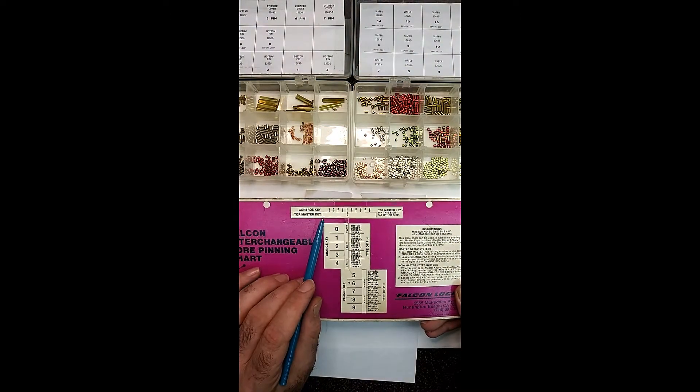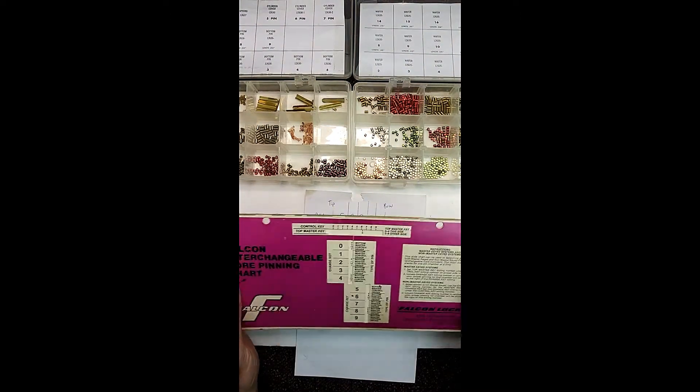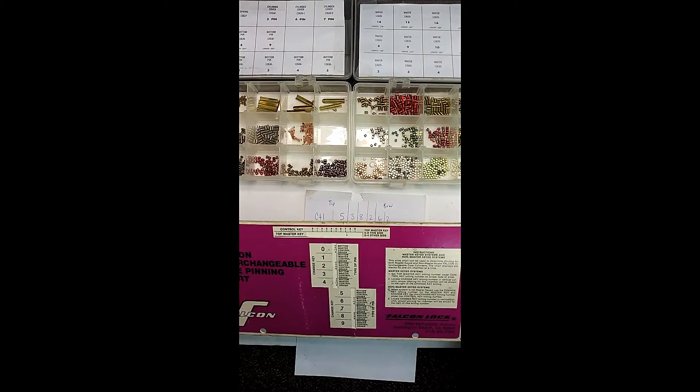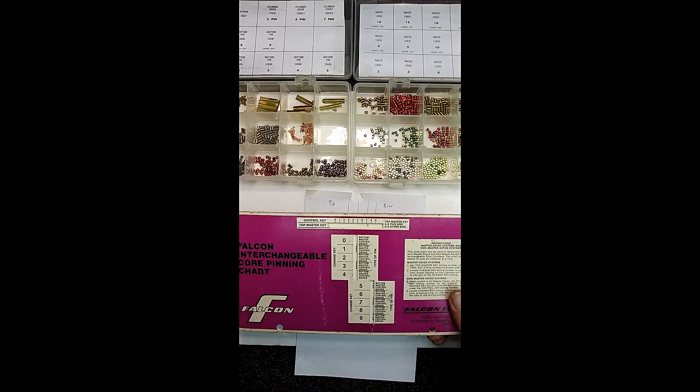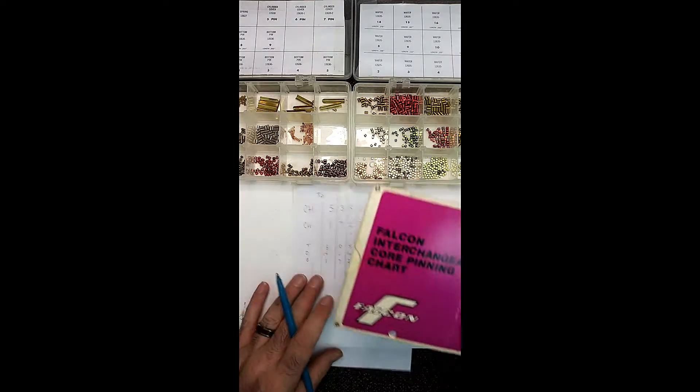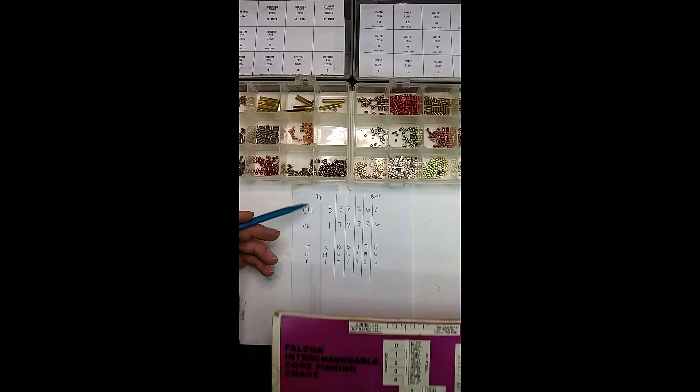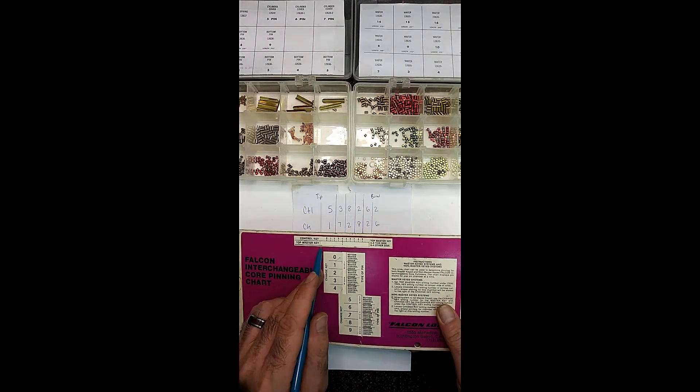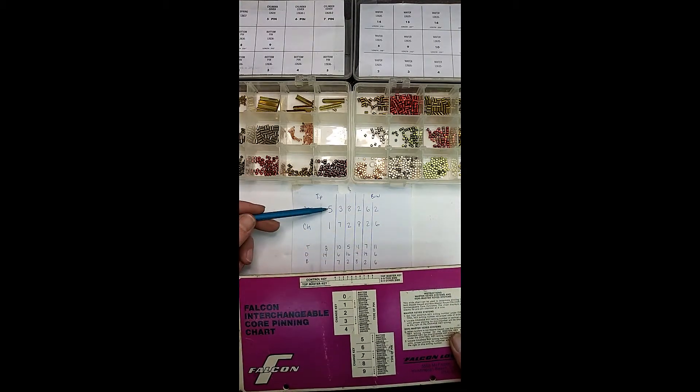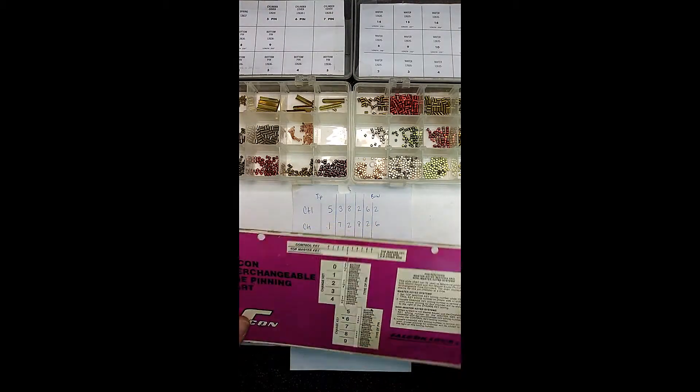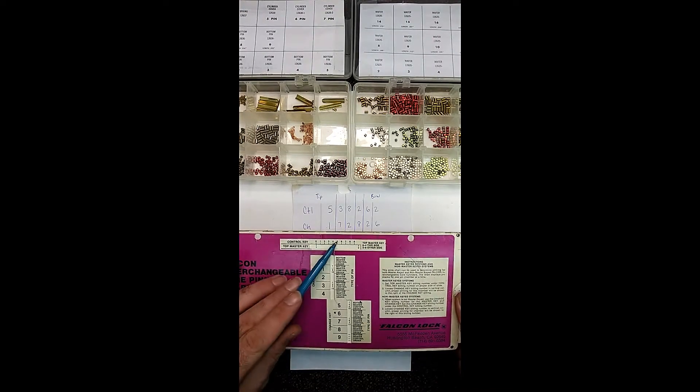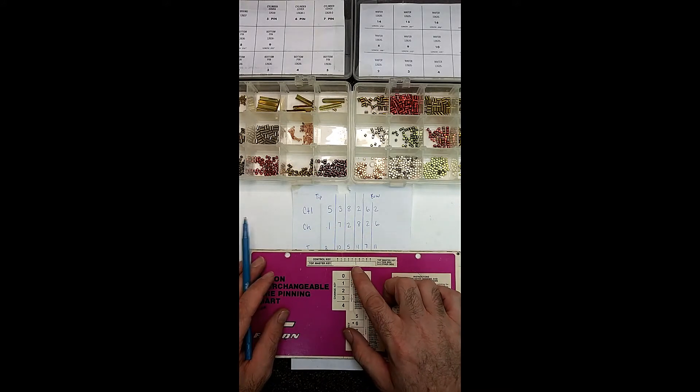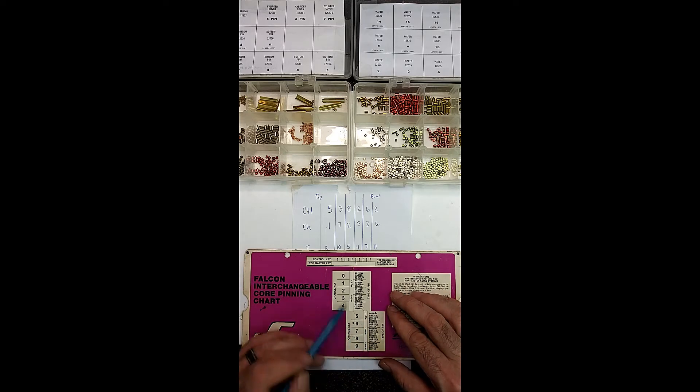So on one side, you have master key numbers. It starts at zero and goes up to, I believe, four. And then on the opposite side, it has the numbers five through nine. So just to kind of run you through it. In this case, your control key number is always listed up here. It's static. It's the change key or master key that changes. So in this case, we have a five and a one. So we flip it over. We try and line up the one here with the five up top.